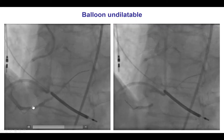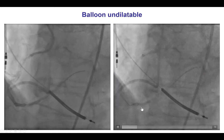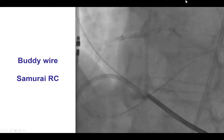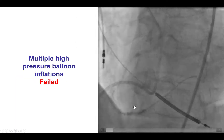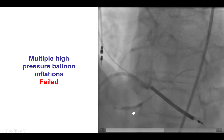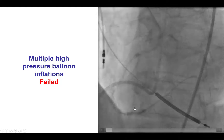We advanced the balloon to the distal RCA, but unfortunately we found that the lesion was balloon undilatable with a persistent waist in the balloon. One way to deal with this is to use one or more buddy wires in an attempt to modify the lesion. So we advanced a Samurai RC wire next to the initial wire, and then performed more high-pressure balloon inflations, but unfortunately, despite going close to 30 atmospheres, we were unable to dilate the lesion.